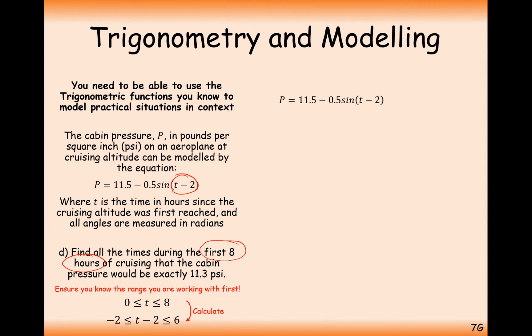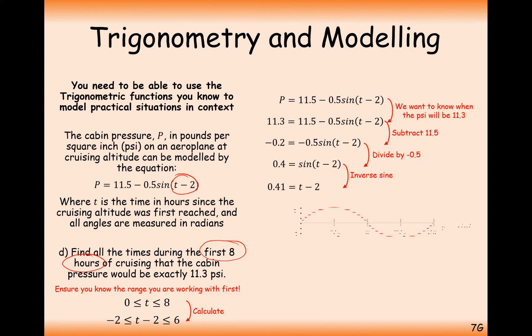Now solve this equation. We want the psi to be 11.3, so set P equal to 11.3. Do a bit of rearranging and division, and we get sine T minus 2 equals 0.4. Sine inverse in radians mode gives 0.41, which equals T minus 2. Now find all the other T minus 2 values. We've got a marker at 0.4 with a solution at 0.41. Go across pi minus this answer, we get 2.73. If you add or subtract 2 pi radians to look at other solutions, none would be inside minus 2 to 6.